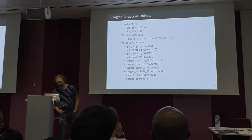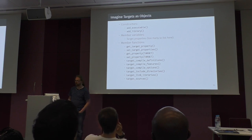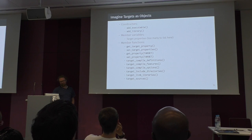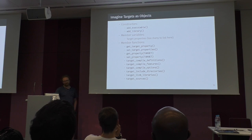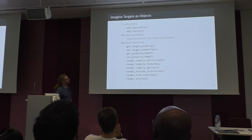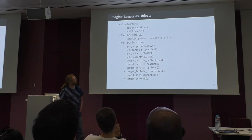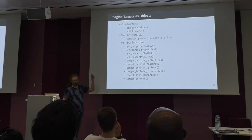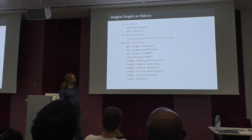Targets can be imagined as objects. You have constructors like add_executable and add_library. You have member variables — the target properties — there are so many they can't be listed on one slide. And member functions that access or modify member variables: get_target_property, set_target_property, get_property and set_property with a target keyword, and the specific ones — target_compile_definitions, target_compile_features, target_compile_options, target_include_directories, target_link_libraries, and target_sources.